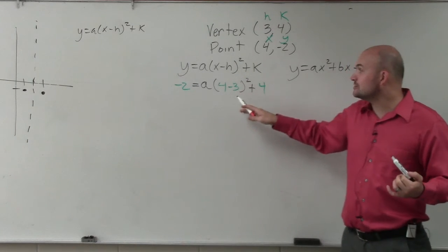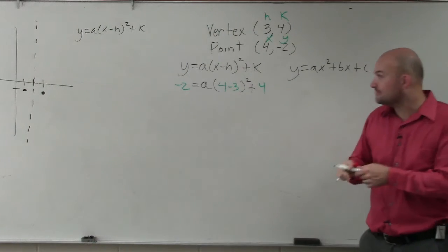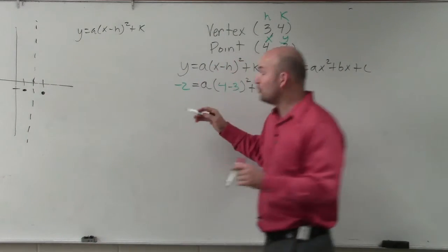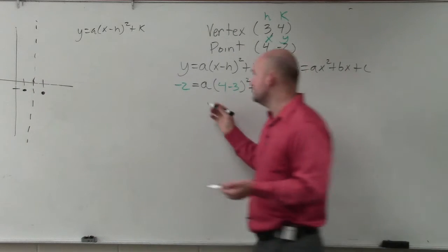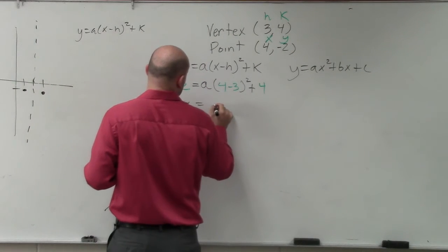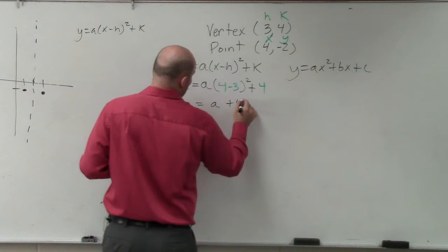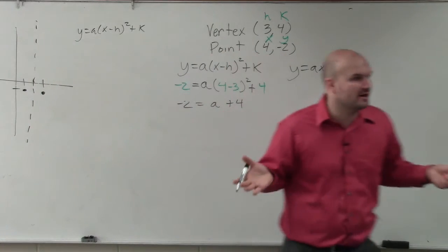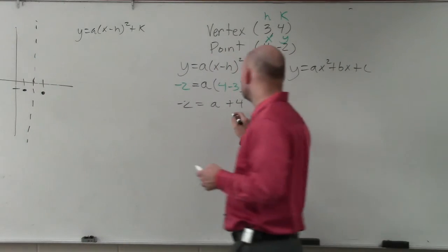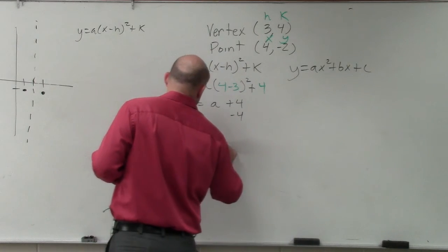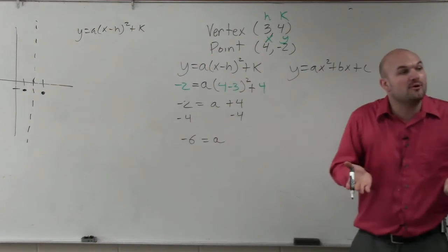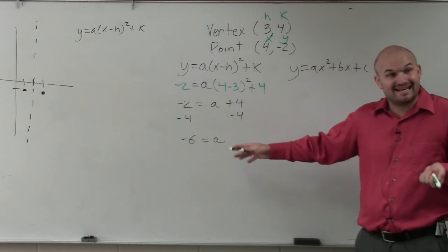Now all I simply need to do is find the value of a. So in this case, follow the order of operations. 4 minus 3 is 1, 1 squared is 1. So I'll write this as negative 2 equals a plus 4, because a times 1 is just a. Then I subtract 4 and I get negative 6 equals a. So now we know what the value of a is, it's negative 6.